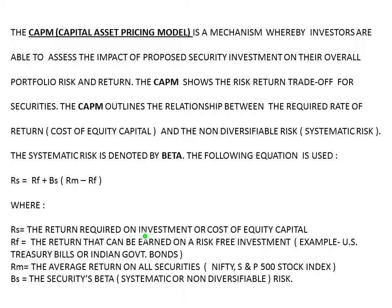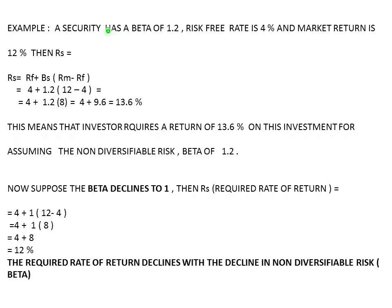RS is the return required on investment, or cost of equity capital. RF is the risk-free return — the return that can be earned on a risk-free investment without bearing any risk, for example US Treasury bills or Indian government bonds, which guarantee a minimum return. RM is the average return on all securities, such as the return provided by Nifty (NSE 50 index) or the S&P 500 stock index. BS is the security's beta — the systematic or non-diversifiable risk.